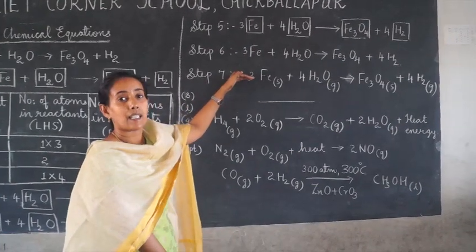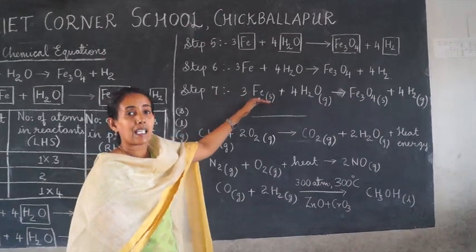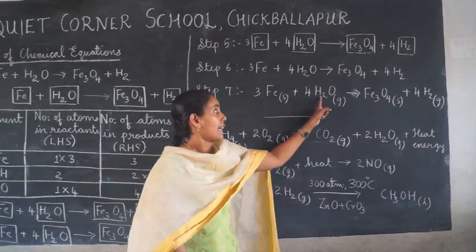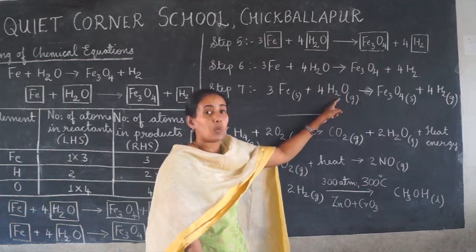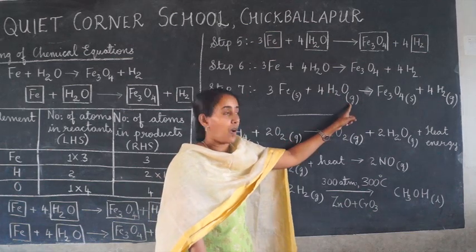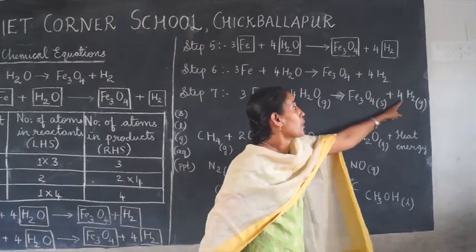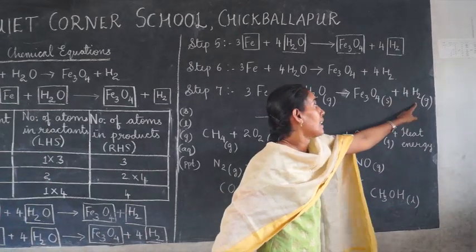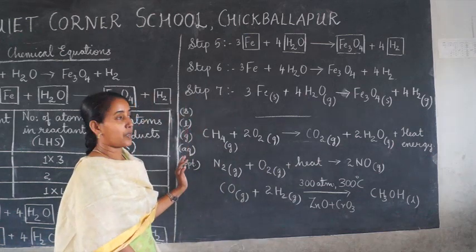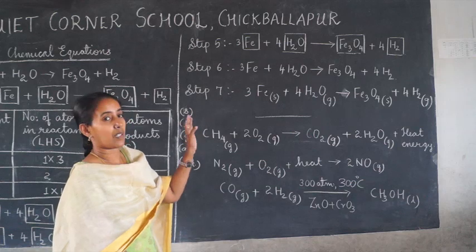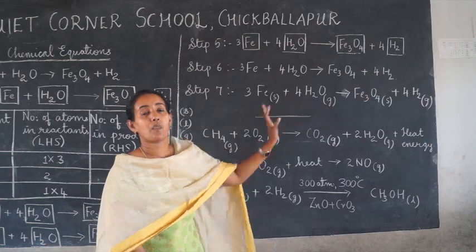The final step is mentioning the physical state, which is very important. Iron is a metal in the solid state. Iron does not react with water at room temperature — it can react only with steam, so water is in the gaseous form. The products are iron oxide Fe₃O₄ in the solid state and H₂ gas. You have to mention the state of each element or compound involved in the reaction.